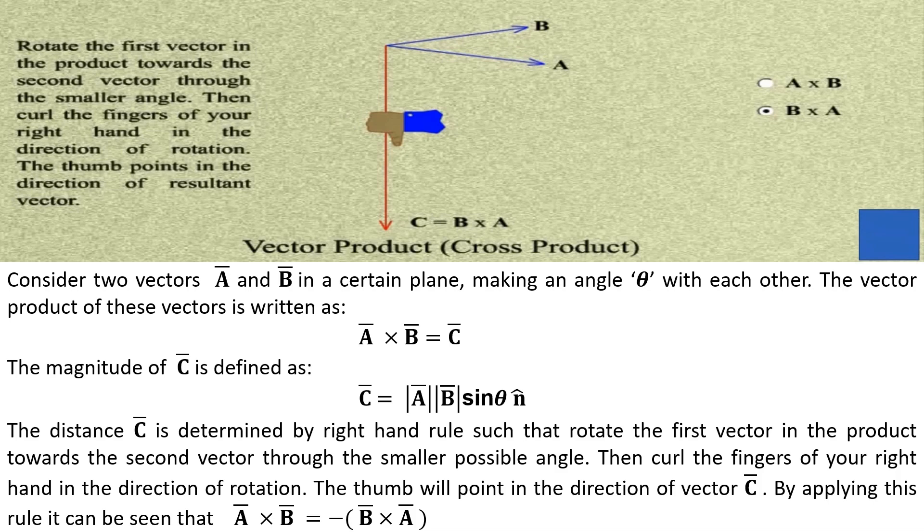By applying this rule it can be seen that the cross product of vector A into B is equal to the cross product of vector B into A, but opposite in direction.